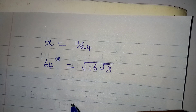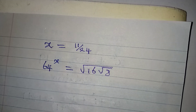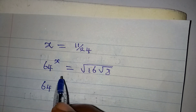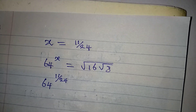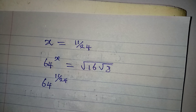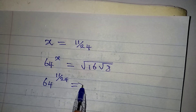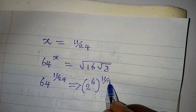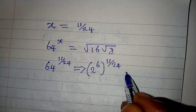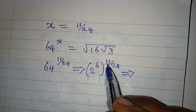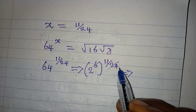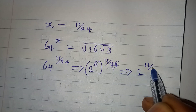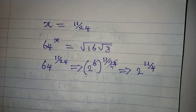Let's deal with the left-hand side first. We have 64 to the power of 11 over 24. Can we simplify this? Yes — 64 is 2 to the power of 6, so we have 2 to the power of 6 times 11 over 24. Simplifying: 6 goes into 24 four times, so this gives us 2 to the power of 11 over 4. That is what we have on the left-hand side.